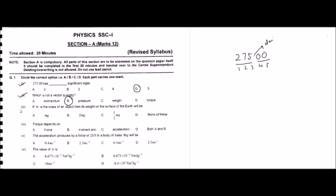Question number three: if m is the mass of an object, then its weight on the surface of Earth will be? First, recall the formula of weight: W equals mass times gravitational field strength.